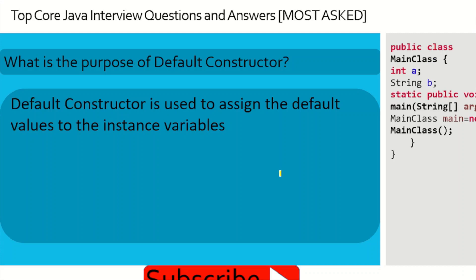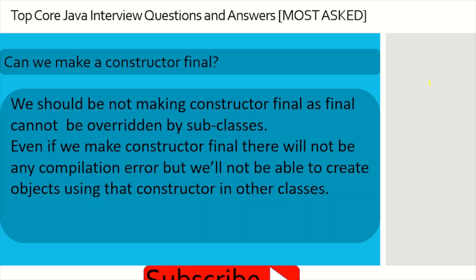What is the purpose of a default constructor? If we do not provide one, the compiler automatically provides it. Its main purpose is to assign default values to instance variables. For example, if a class has an int variable 'a' and a String variable 'b' with no constructor defined, the compiler provides a default constructor so that when an object is created, 'a' gets value 0 and 'b' gets null.